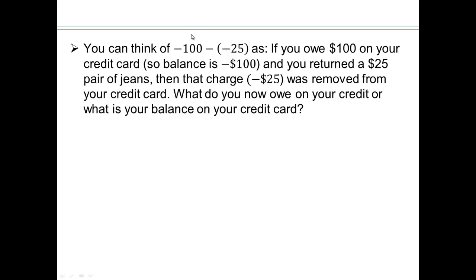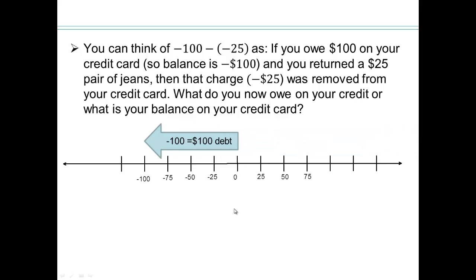Subtracting a negative 25. So you owe $100 on your credit card. You return a $25 pair of jeans. So that means the negative $25 you owed was removed from that $100 credit card balance. So now what? So let's take a look. $100 debt. We had $25 debt removed. So you're going negative. So that's the subtraction. Subtraction of negative 25. Move opposite direction to negative 25. Negative 25 is in that direction. Opposite will be that direction. So you're going 25 that way, which would be negative 75.